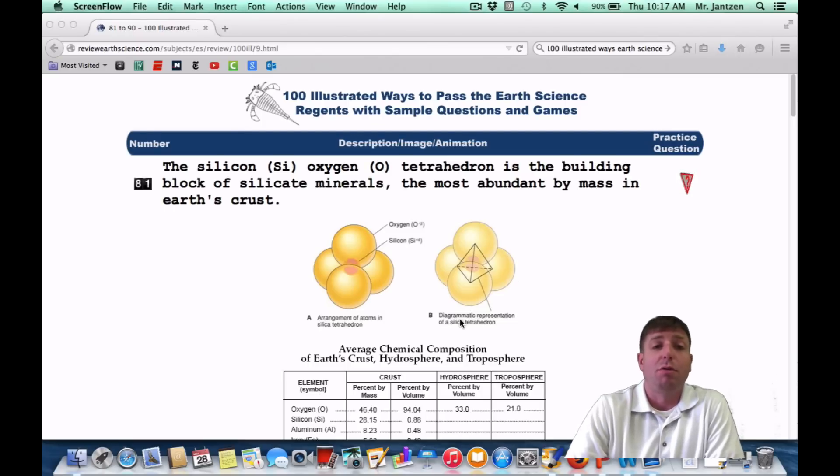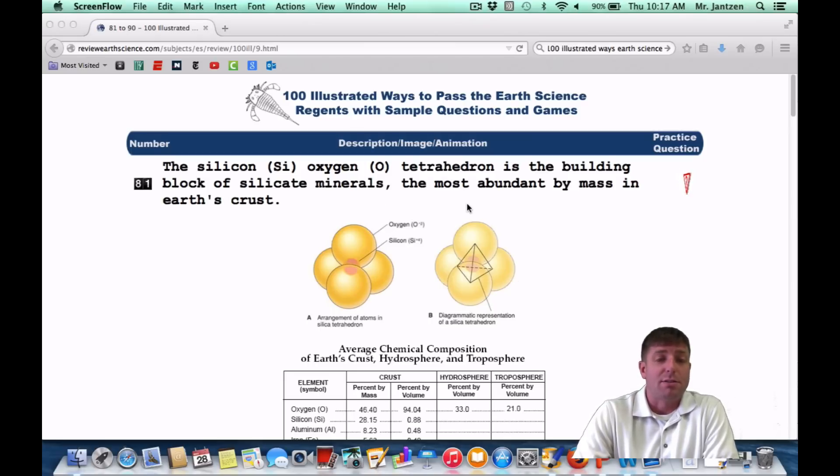Hey guys, Mr. Janssen here again, here to take you through 81 through 90 of the 100 illustrated ways to pass your science regents. So let's get started. Number 81: the silicon and oxygen tetrahedron is the building block of silicate minerals, the most abundant by mass in Earth's crust.